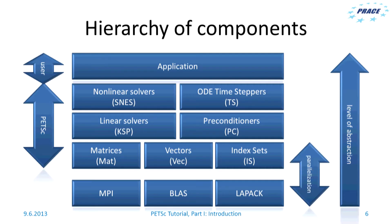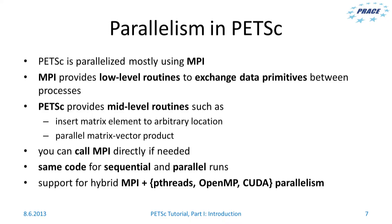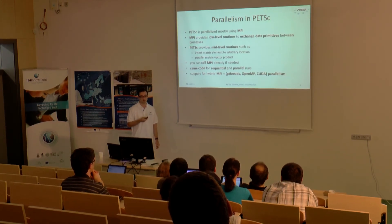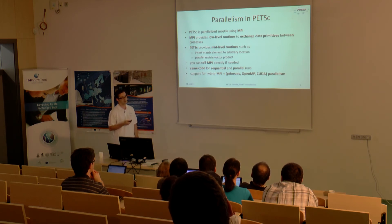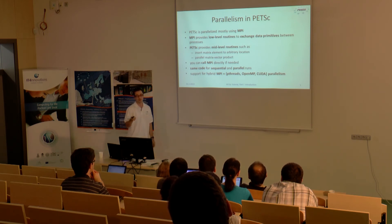Parallelization takes place only at the first level of objects. How is PETSc parallelized? It is parallelized mostly using MPI, which provides low-level routines to exchange data primitives between processes. PETSc provides mid-level routines, particularly for all the linear algebra — for instance, altering matrix elements or sparse matrix-vector product. You can call MPI routines directly if needed, for example to obtain process rank.